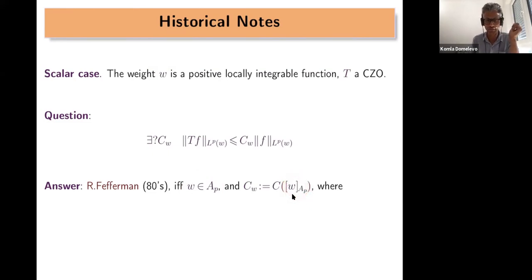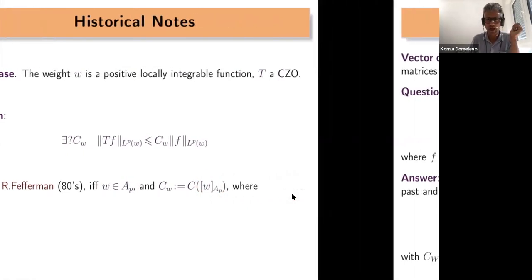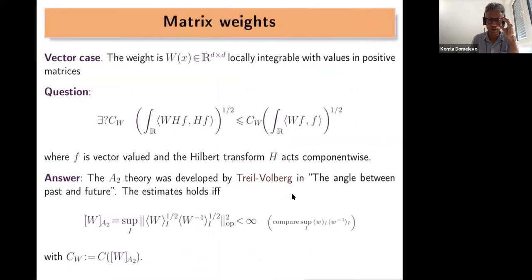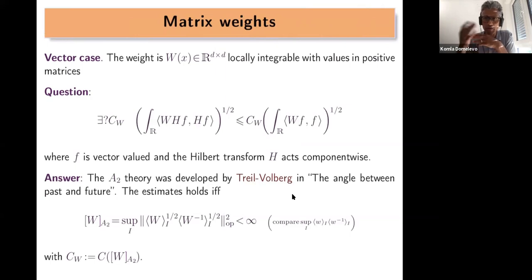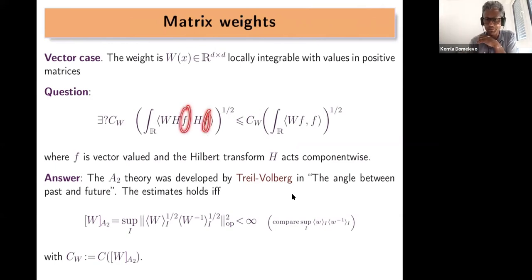It is known that this operator is bounded if and only if the weight obeys a certain condition — it belongs to a class called the AP class — which is characterized by the finiteness of a certain number called the characteristic of the weight. We will see some examples later. So what now with matrix weights?